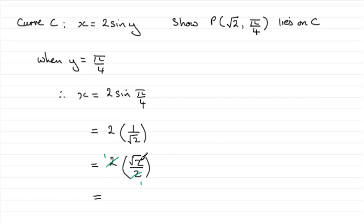And what it gives you is just simply root 2, and therefore that tells us that P lies on the curve C. Alright?